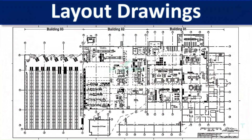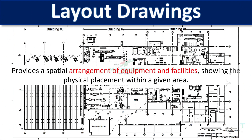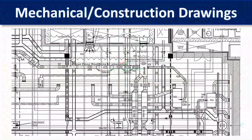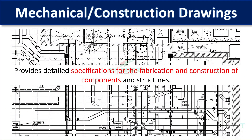Layout Drawings show the physical arrangement of equipment and piping within a plant. They help visualize the spatial relationships and ensure everything fits in the available space. Mechanical or Construction Drawings provide detailed specifications for building structures, equipment, and components. They include dimensions, materials, and other construction details.